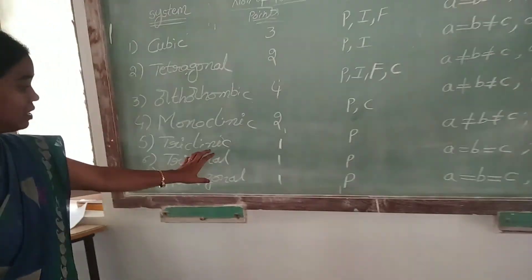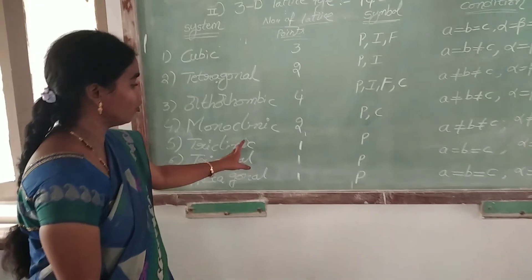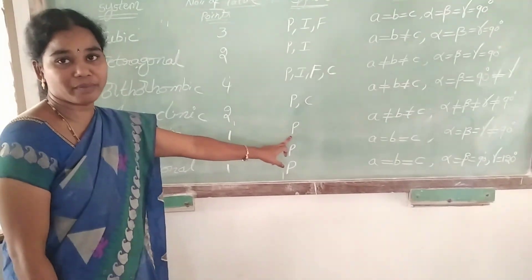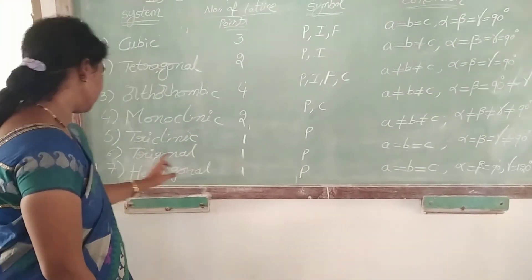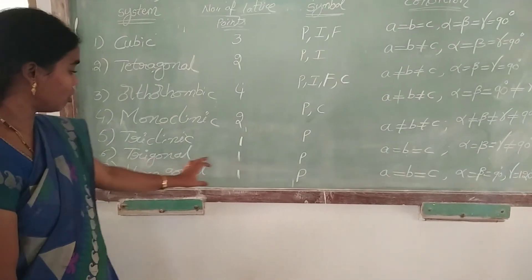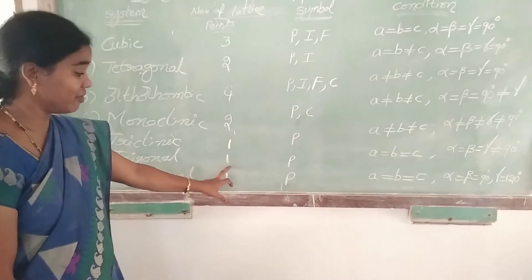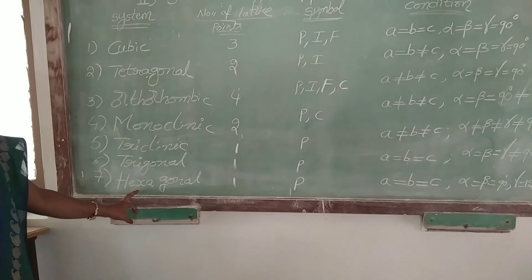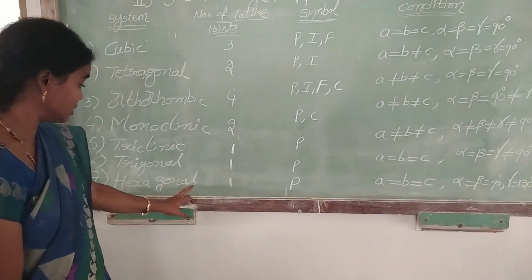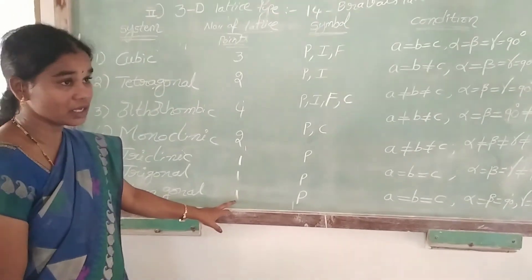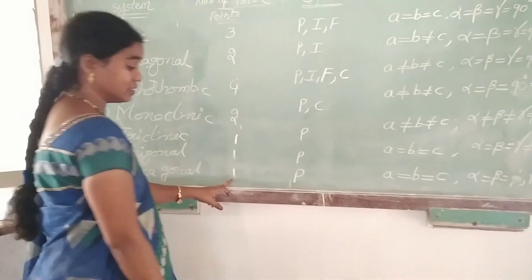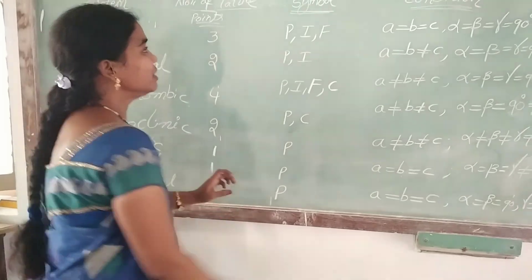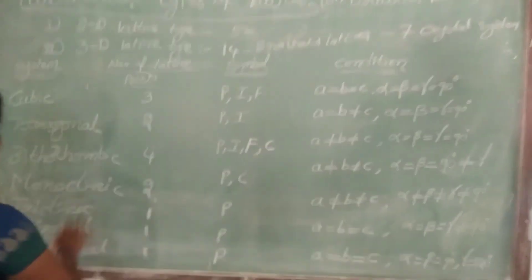Next, monoclinic crystal system has 2 types of Bravais lattices: P and C. Next, triclinic crystal system has only 1 Bravais lattice: primitive crystal system. Trigonal also has only 1 Bravais lattice, that is P. And hexagonal crystal system also has only 1 Bravais lattice, that is primitive crystal system. These are the 7 crystal systems.